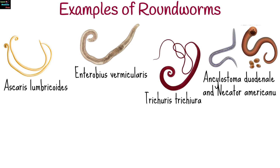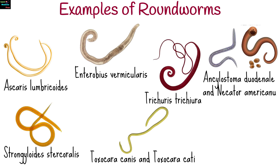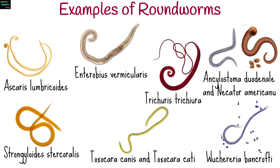Hookworms such as Ankylostoma duodenale and Necator americanus. Strongyloides stercoralis, that causes strongyloidiasis. Toxocara canis and Toxocara cati, found in dogs and cats, causing Toxocariasis in humans. Wuchereria bancrofti, that causes lymphatic filariasis, or elephantiasis.